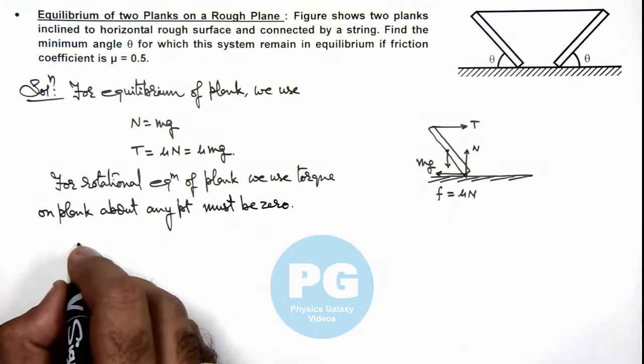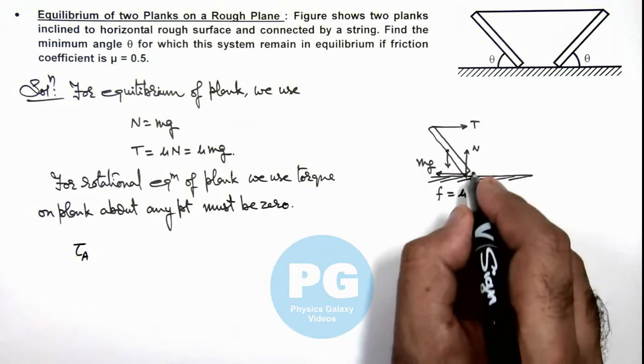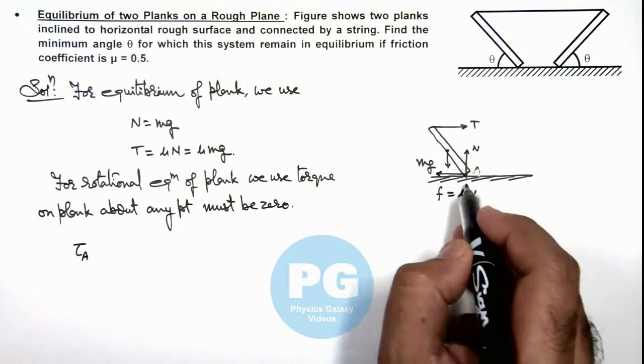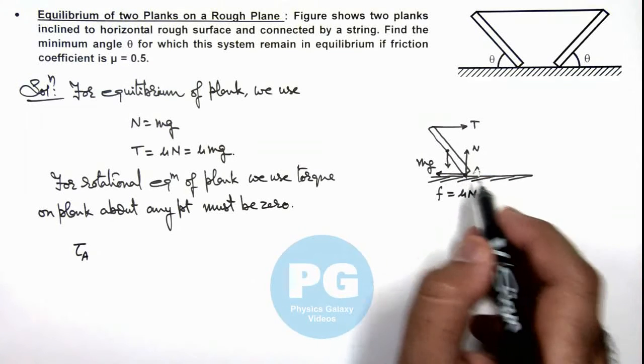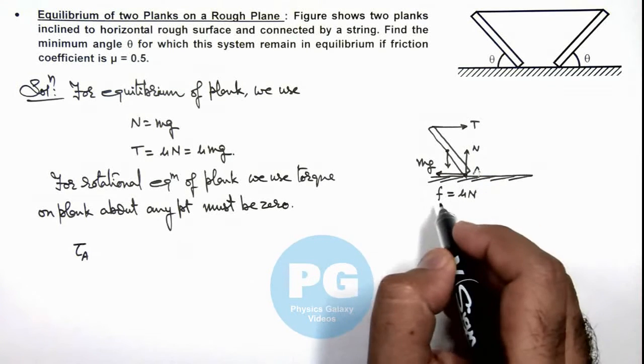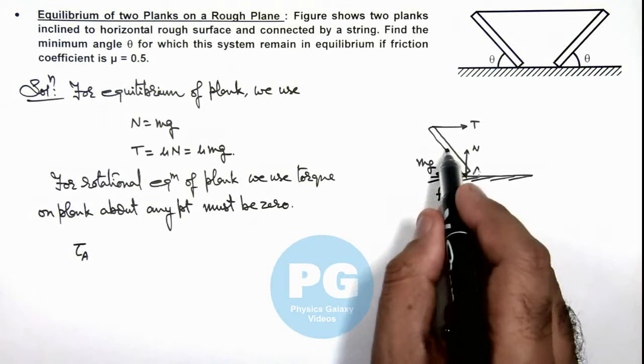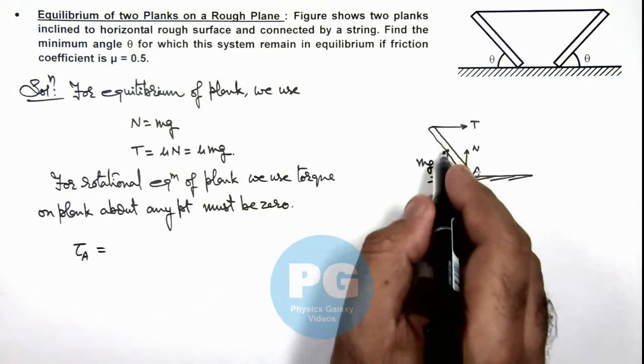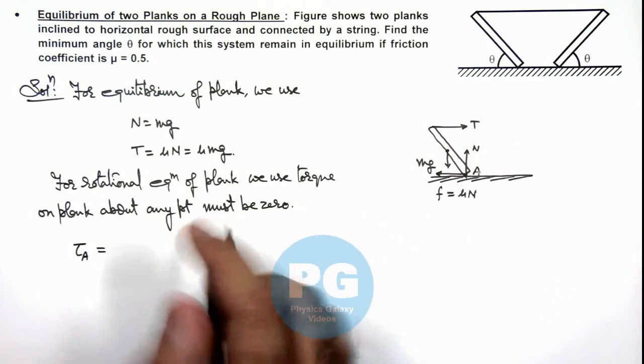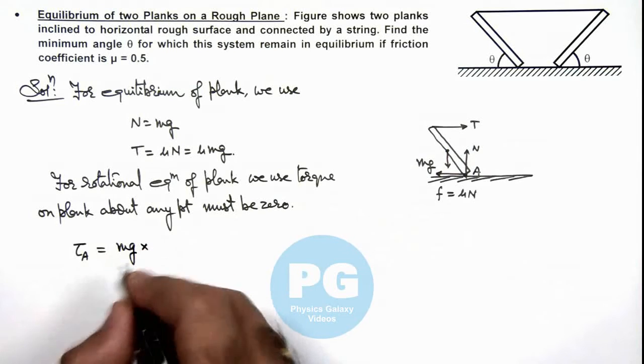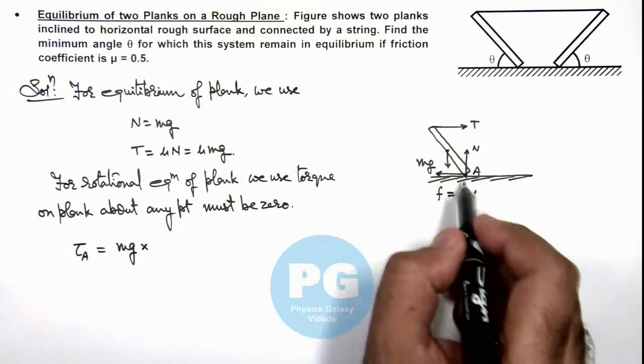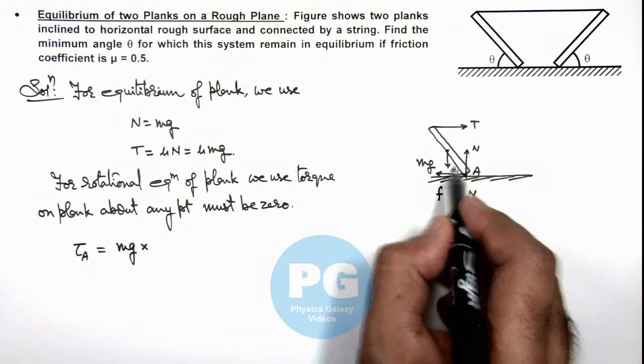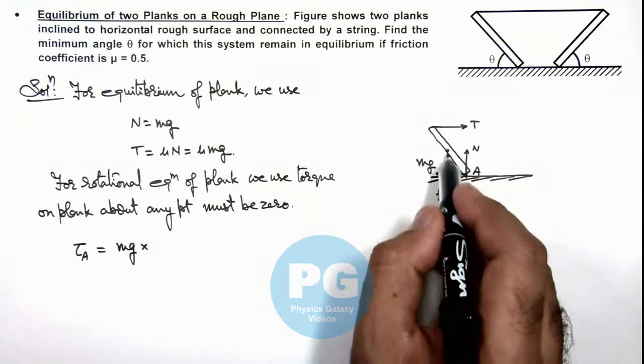So here we calculate the torque about point A which is the bottom of this plank. So here we can see the torque of normal reaction and friction would obviously be zero as these forces are passing through A. And the torque of mg and tension are in opposite direction. So here we can write torque about A due to mg, it is in anticlockwise direction which is mg multiplied by, if the length of the plank is l, this can be written as l by 2, and if this angle is θ, here we can write this will be l by 2 cos θ.